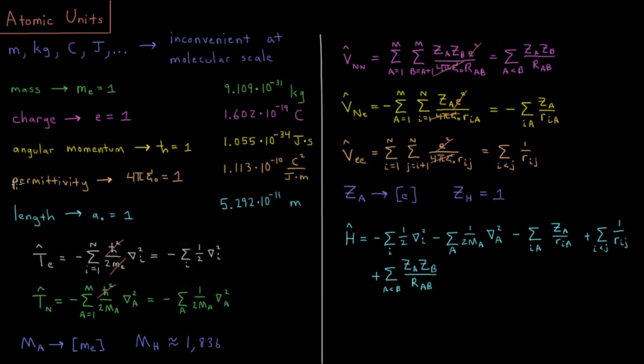Also, the permittivity of free space multiplied by 4 pi, that is going to be 1, so 1.113 times 10 to the negative 10 coulombs squared per joule meter, permittivity of free space.